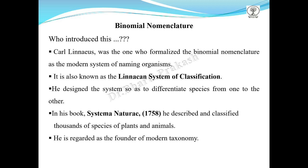Who introduced binomial nomenclature? Carl Linnaeus was the one who formalized binomial nomenclature as the modern system of naming organisms. It is therefore also known as the Linnaean system of classification. He designed this system to differentiate species from one another. In his book Systema Naturae in 1758, he described and classified thousands of species of plants and animals.